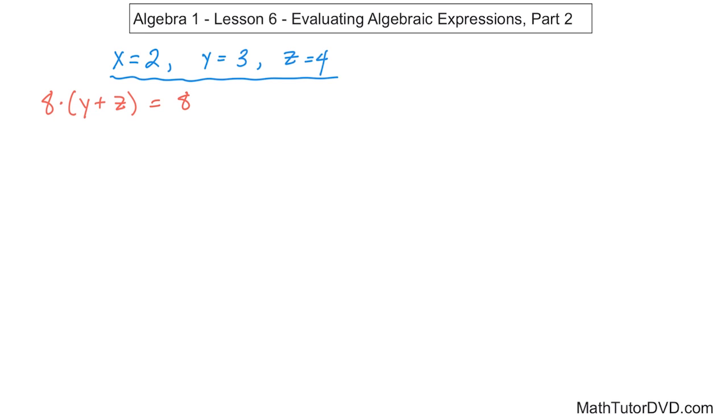So the 8 on the outside, you can't do anything with him, because you always do what's inside the parentheses first. The y is going to be 3, plus the z is going to be 4. And so now you have to, at this point, do what's inside of these parentheses first.